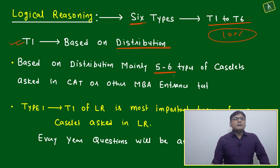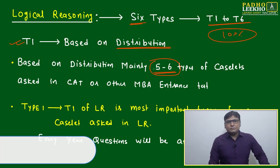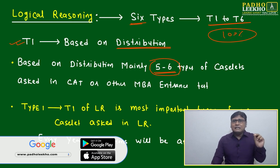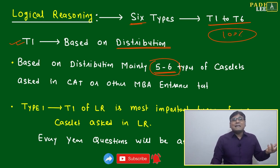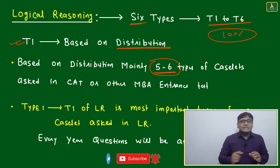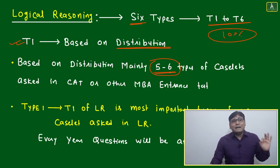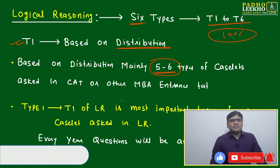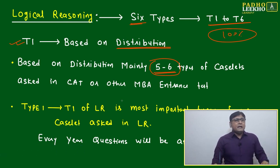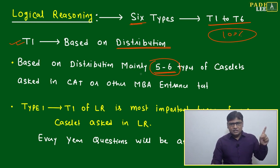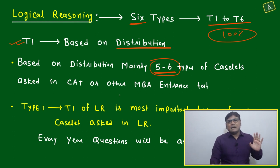After categorizing T1 case sets, we use mainly five to six types of mathematical concepts. For every type of case set, if you know the right tools and mathematical techniques, you will save time. LR is challenging mainly because of time saving. T1 focuses on two key concepts: constant sum and constant product. You will be surprised how beautifully case sets can be framed from these very fundamental concepts.